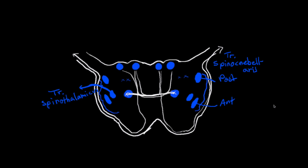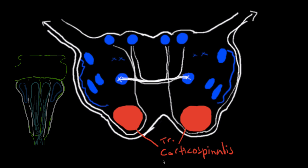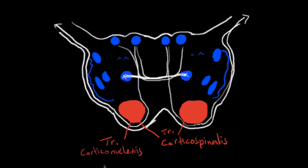Now the descending tracts, highlighted in red, go from the brain down to the spinal cord and then to the muscles. The first is the tractus corticospinalis — as mentioned earlier, the fibers of this tract go down and cross at the lower part of the medulla oblongata. Some fibers of the same tract don't cross at all and continue straight downwards. This tract is responsible for voluntary movement of the trunk and limbs. The next tract, located in the same area, is the tractus corticonuclearis, which is responsible for voluntary movement of the head and neck.